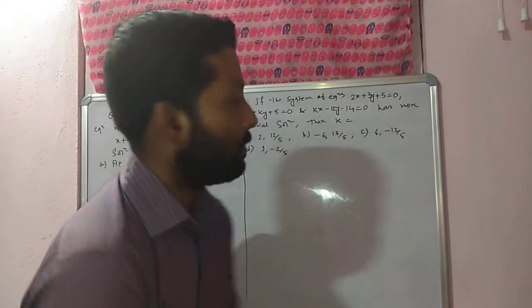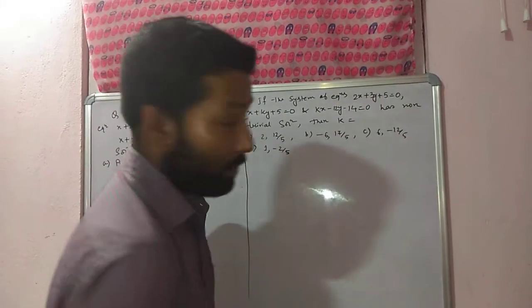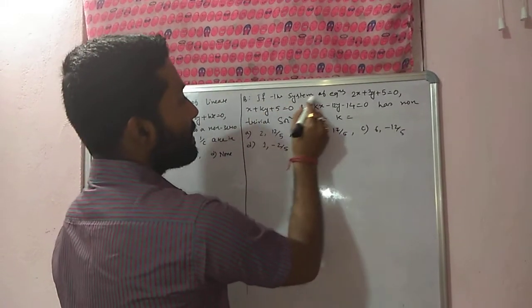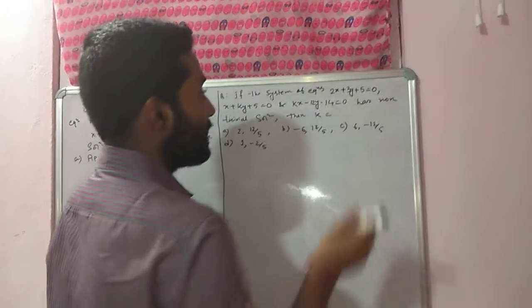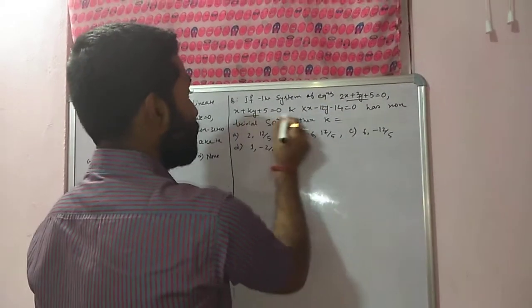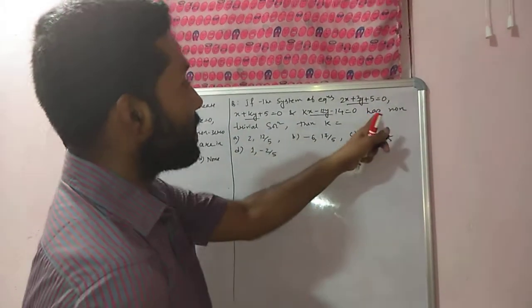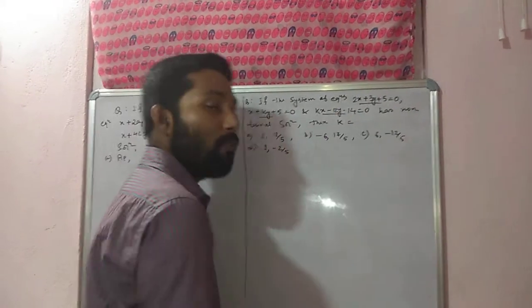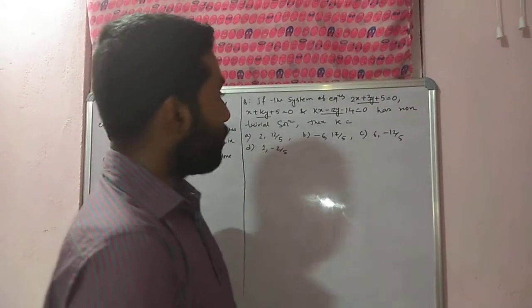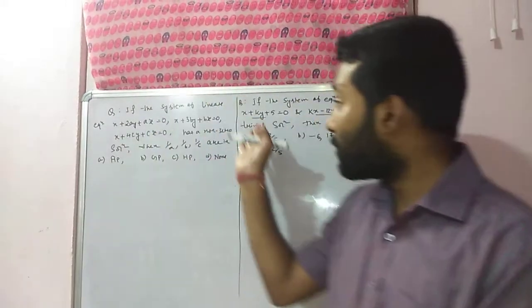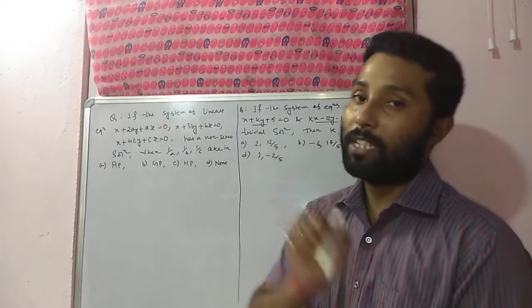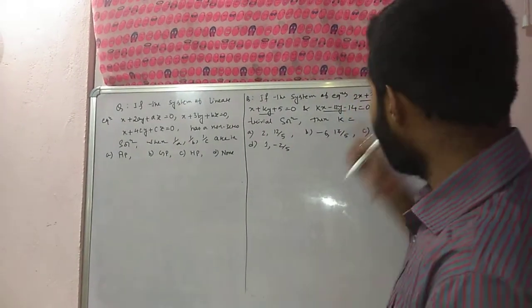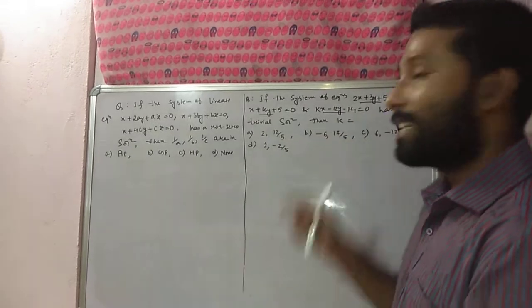Let us discuss some questions of trivial and non-trivial solutions. First, if the system of equations has a non-trivial solution, then what is the value of k? Whether this system of equations are homogeneous or non-homogeneous, first check it out. This system of equations are homogeneous equations because the constant terms are zero here.